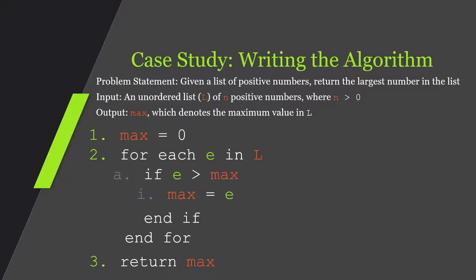This is the algorithm I'm coming up with based on my input and my output. If my input and output change, my steps might have to change as well. Once you've understood your problem and have your input and output and developed your steps, work it out. Draw it on a whiteboard or sheet of paper and figure out — does it work?